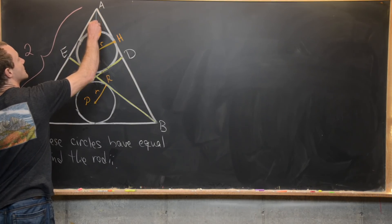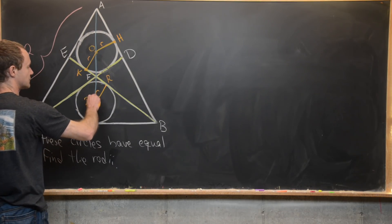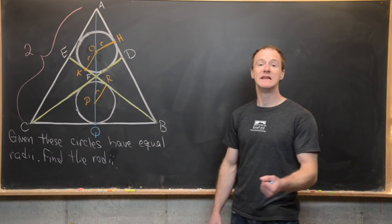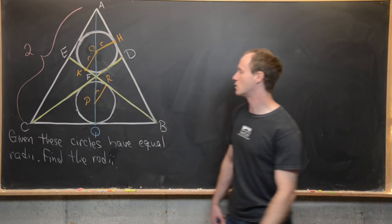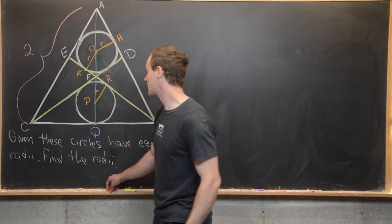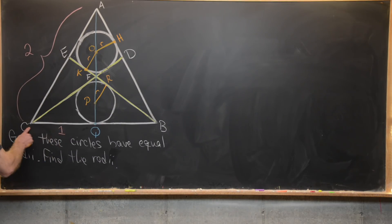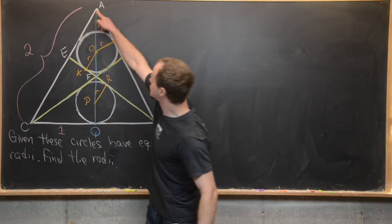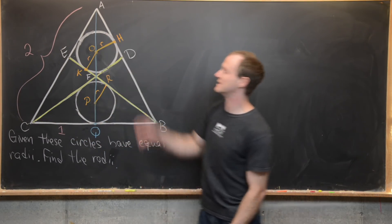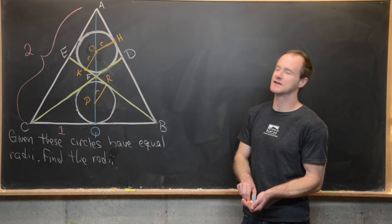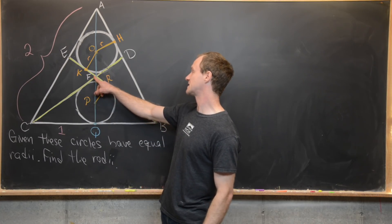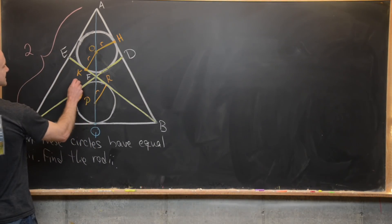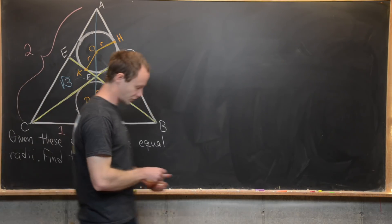We've got a point from here all the way down through all of these points, landing down here at the bottom. I'll call that point Q. Since this is an equilateral triangle with side length 2, we know that the length down here is 1 because CQ bisects CB. We can apply the Pythagorean theorem to triangle AQC to find the length of this altitude, which will be square root of 3, because we want 1 squared plus this squared to equal 2 squared, which is 4. So the altitude has length square root of 3.